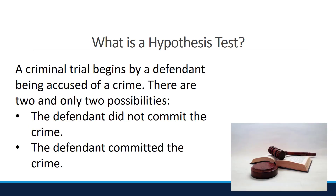Structure of a Criminal Trial. A criminal trial begins with a defendant being accused of a crime. There are two and only two possibilities: the defendant did not commit the crime, or the defendant committed the crime. At the start of the trial, the defendant is assumed to be innocent. The prosecutor believes the defendant is guilty, and it is the prosecutor's job to present enough evidence to the jury to prove the defendant is guilty beyond reasonable doubt. Since the defendant is assumed to be innocent, the defendant is not required to provide any evidence of innocence.